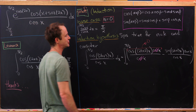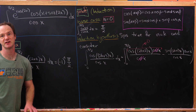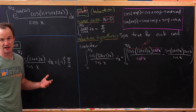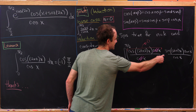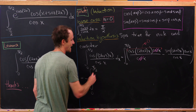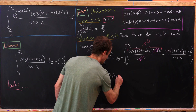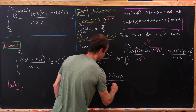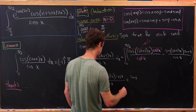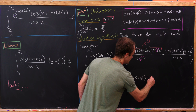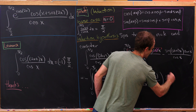Now we use the sum-angle formula for sine on sine of (2k+2)x, with alpha equal to (2k+1)x and beta equal to x. That leaves us with a minus sign out front, and the integral from 0 to pi halves of sine of (2k+1)x times cosine of x, plus sine of x times cosine of (2k+1)x, all over cosine of x dx.